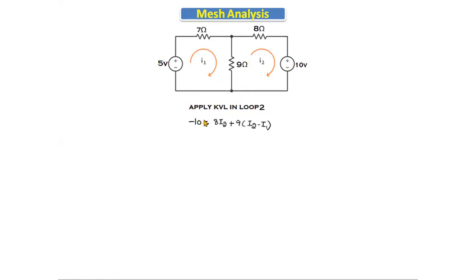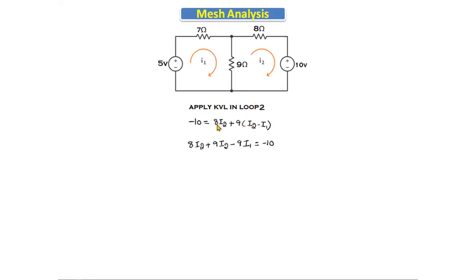Applying KVL in loop two: 2 - 10 = 8·I2 + 9·(I2 - I1). For the 8 ohm resistor only I2 is flowing, but for the 9 ohm resistor both I1 and I2 flow in opposite directions, so we take the difference. In loop one we write I1 - I2; in loop two we write I2 - I1. Simplifying: -9·I1 + 17·I2 = -10. This is equation number two.